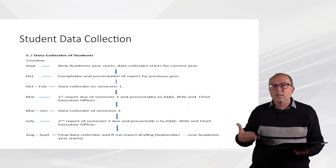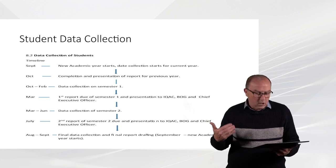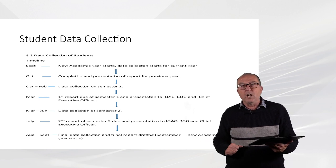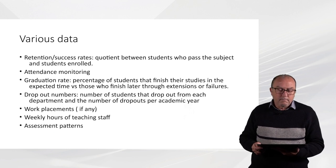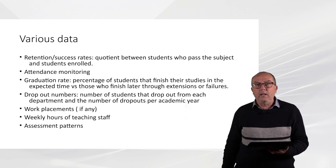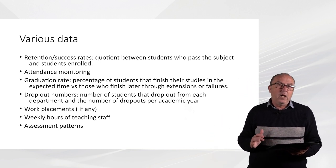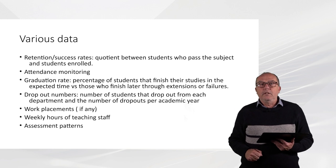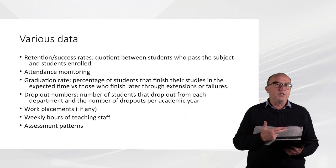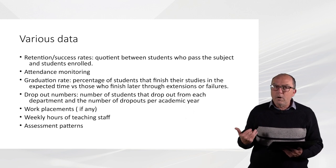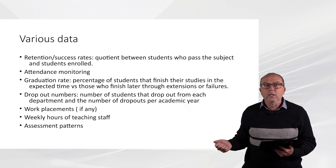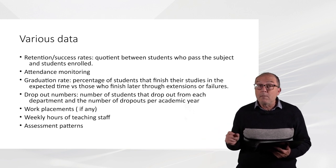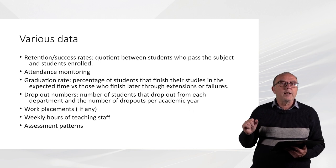This is also discussed in a meeting to see what actions need to be taken. And in August and September there is the final data collection and final reporting. The various data includes the retention or success rates — the quotient between students who pass the subject and the students enrolled. We also have attendance monitoring through appropriate software, and we also have the graduate rate: the percentage of students that finish their studies in the expected time versus those who finish later through extensions or failures.